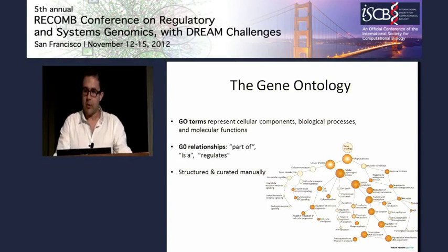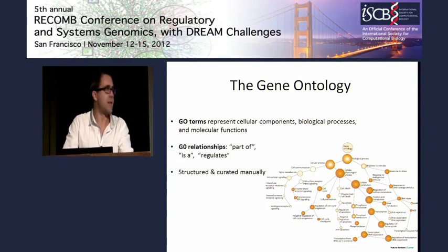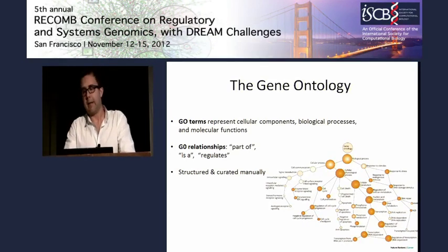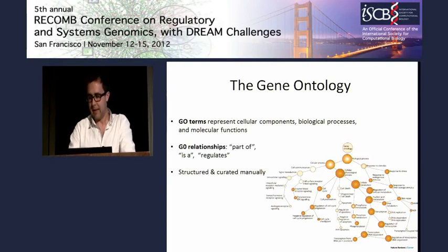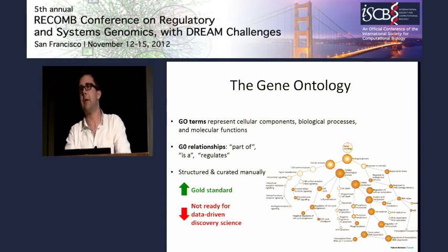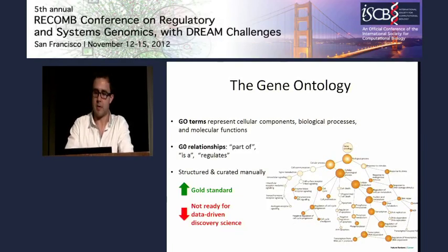One characteristic that distinguishes GO from any of the models we have seen at this conference is that GO is itself manually structured. It's developed by humans reading literature, identifying all the components that have so far been characterized, and putting them into this hierarchy. The problem is that while this is great for categorizing what is already known, this is not a way to get at new biology — to discover new components, new processes, and new functions.